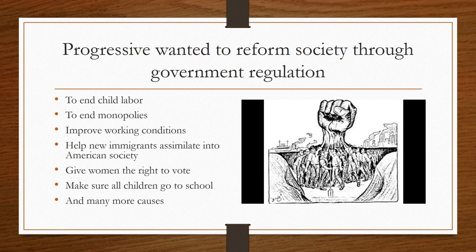Those are just a few examples of what the progressive movement was about and who was involved. But overall, the Progressives wanted to reform society through government regulation to end child labor, to end monopolies, to improve working conditions, to help new immigrants assimilate into American society, to give women the right to vote, and to make sure all children could go to school — among many more causes not yet discussed.